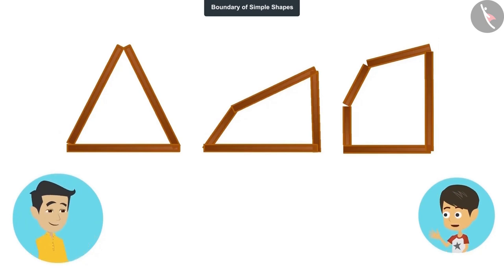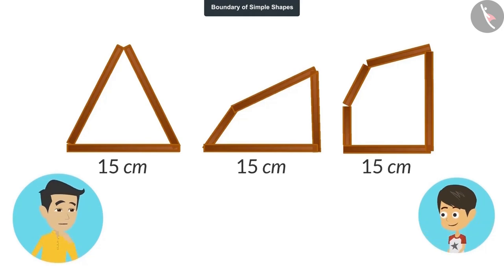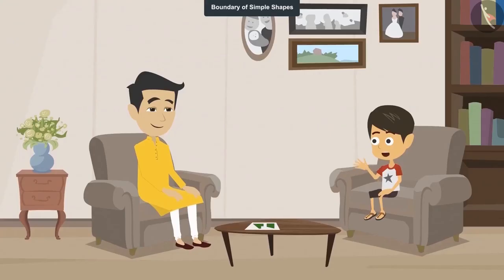Yes, it is very easy. Sticks of 15 centimeters each have been used to make all the three shapes. So the length of their boundaries will also be the same. That is 15 centimeters. You see, the shape of these three figures is different. Despite the fact that the length of the boundaries is the same. Now I understand that different shapes can have the same length of boundary.